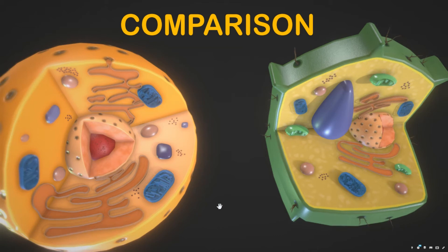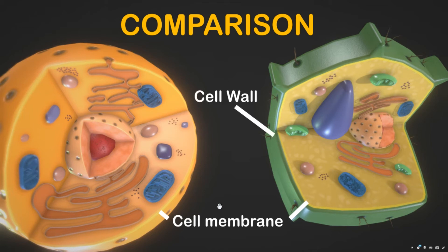Both plant and animal cells have a cell membrane, but only plant cells have a cell wall. In plant cells, the cell wall surrounds the cell membrane, giving the plant cell its box-like shape. This also allows plants to remain strong and stand upright even if they grow to great heights.